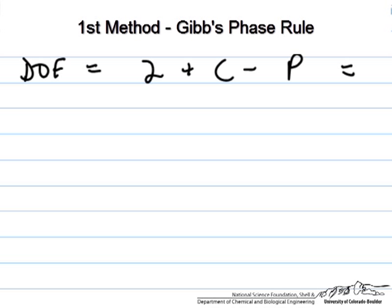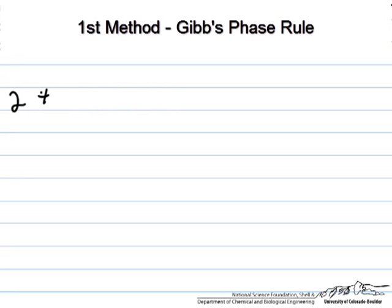So if we have 2 plus 2 minus 3, we have two components which are cyclohexane and water, and we have three phases which are two liquids and one vapor, and so that gives us one degree of freedom.